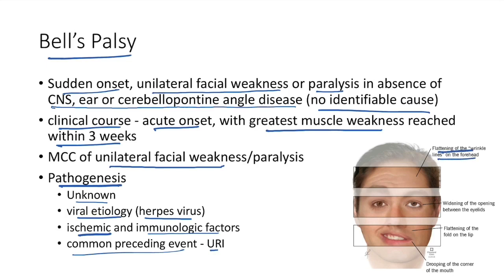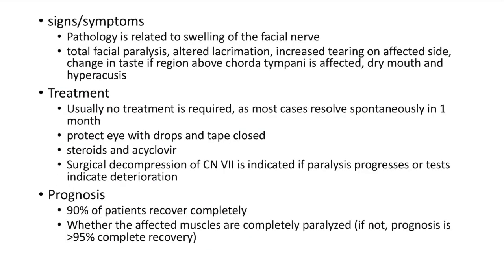Clinical features of Bell's palsy: flattening of the wrinkled lines on the forehead, widening of the opening between the eyelids, flattening of the nasolabial fold, and drooping of the corner of the mouth on the affected side.